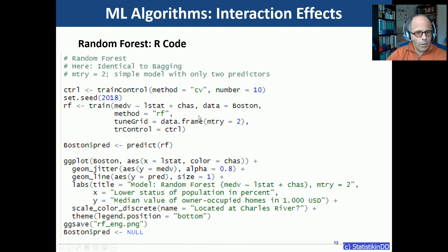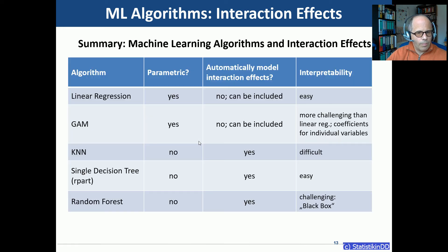Here is the code again — method equals RF for random forest, and I fixed mtry to 2 because it doesn't make sense to use fewer than two predictors. You can pause the video for a closer look at the code.